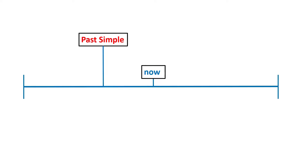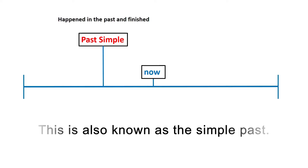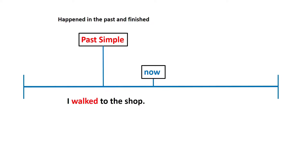The past simple is something that happened in the past and finished. For example, I walked to the shop. Walked is the past simple.